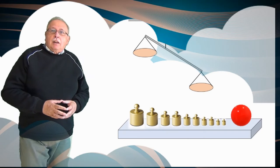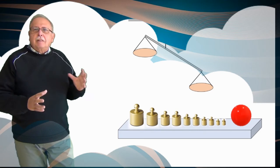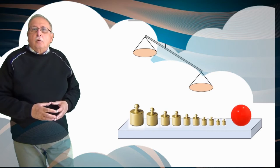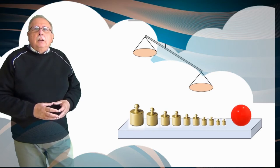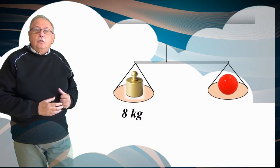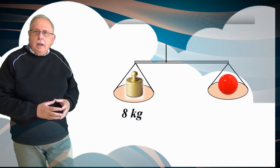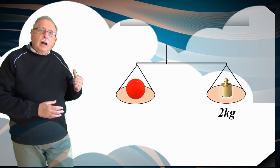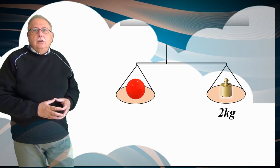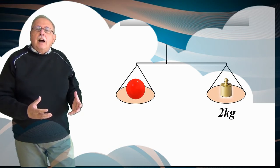A treia întrebare. Să presupunem că balanța are acum talere și avem destule mase marcate de tot felul de valori ca să putem cântări masa unui corp oarecare. Când punem corpul pe talerul din dreapta, balanța se echilibrează cu masa de 8 kg, așa cum vedeți în desen. Dacă punem corpul pe talerul din stânga, atunci balanța se echilibrează când punem pe talerul din dreapta 2 kg. Ce masă are corpul?